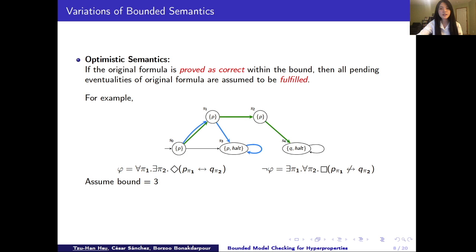As we can observe, there is no trace on the model that can really satisfy NOT phi. Since no counter example can be found here, we use optimistic semantics to conclude that the given structure k does not satisfy NOT phi within three steps, implying that k is not refutable in infinite semantics. Thus, we say k satisfies the original phi.